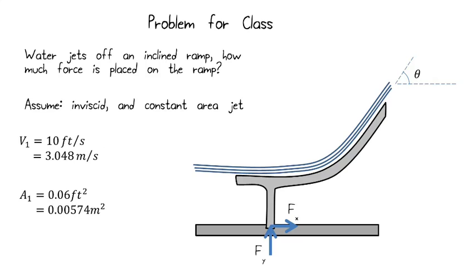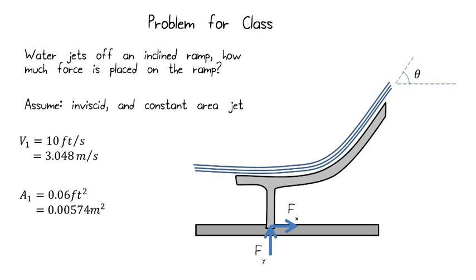Let me preview the problem we'll work on in class. We have an inclined ramp with water jetting onto it — a jet with a known velocity and area hits the ramp, curves up, and exits at angle theta. We assume it's inviscid, meaning zero viscosity and no shear forces, and that the jet has constant area at inlet and outlet. We want to find the force being placed on the ramp — how much force is needed to keep it stationary — which would also tell us the stress in the support leg and how strong the ramp needs to be.